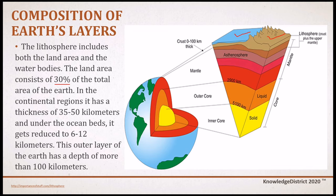The lithosphere includes both the land area and water bodies. Land area consists of 30% of the total area of the Earth. In continental regions, it has a thickness of 35 to 50 kilometers, and under the ocean beds it is reduced to 6 to 12 kilometers. This outer layer of the Earth has a depth of more than 100 kilometers.